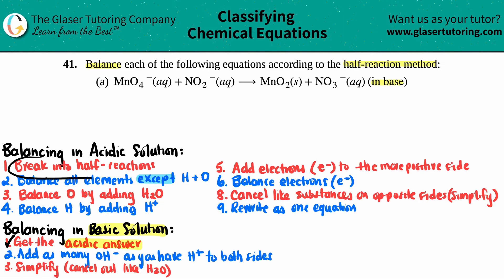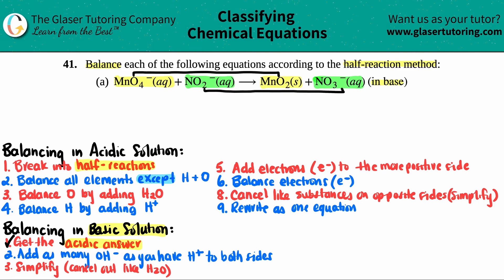The first thing we have to do is break this whole thing into two half reactions and pick the elements that go together — pick the compounds that go together, look for similar elements. I have MnO4 here, so I have a manganese, and on the product side I have a manganese in MnO2, so these go together. The other two have nitrogens: nitrite NO2 and nitrate NO3, so the nitrogens go together. That's one half reaction, and then the other pair is the second half reaction.